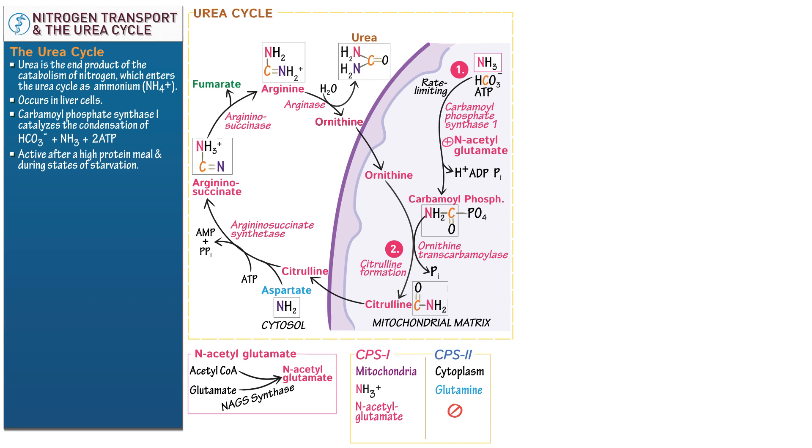CPS1 is found in liver and in kidney. Again, this makes sense. The urea cycle is located in certain organs dedicated to urea excretion. CPS2 is not. It's ubiquitous. Again, this makes sense. The entire body needs nucleic acids.